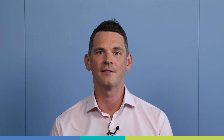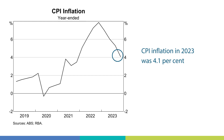That said, this excess demand is putting upward pressure on inflation. Turning to inflation now, it continued to ease in the December quarter but still remains high. The Consumer Price Index, or CPI, increased by 0.7% in the December quarter and by 4.1% over the year. This is down from 5.4% in the September quarter, which means headline inflation has eased further in year-ended terms.